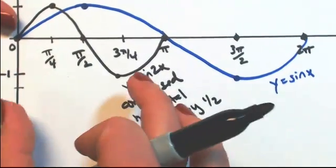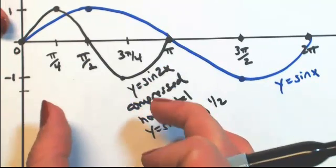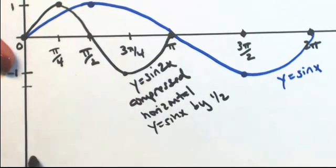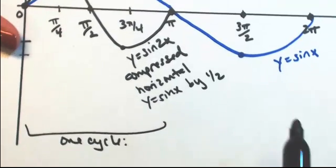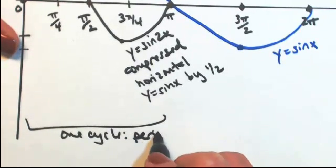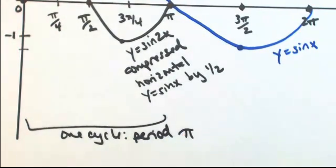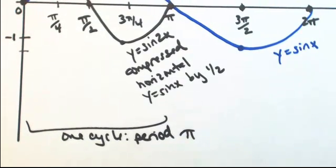So the period for our cycle of y equals sine 2x is only pi. So this is one cycle with a period of pi. Because after pi, everything will start repeating. So the period got cut in half.